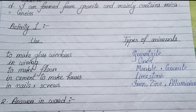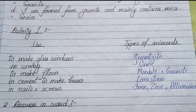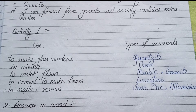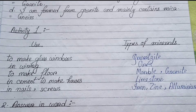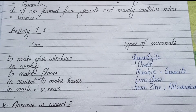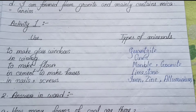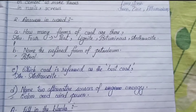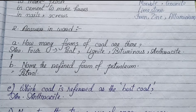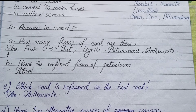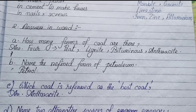Activity one: Uses and types of minerals. To make glass windows — Quartzite. In wearing ores — to make floor — Marble/Granite. In cement to make houses — Limestone. In nails, screws — Iron, Zinc, Aluminum. Number two: Answer in one word. (a) How many forms of coal are there? — Four: Peat, Lignite, Bituminous, Anthracite.